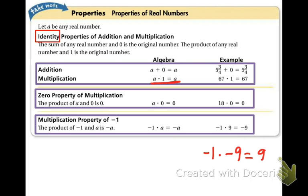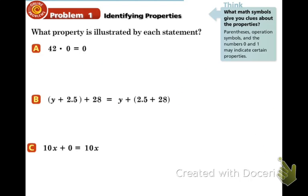Alright, we're ready for our first example. What property is illustrated in each statement? Well, we're multiplying by zero. So we're using the zero product property.